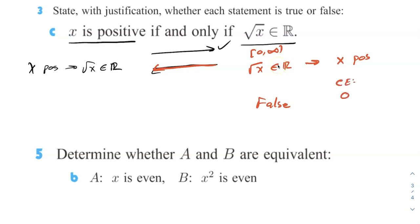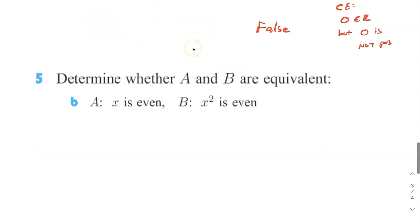We haven't talked about this yet, but a lot of times when something is false, you want to give a counter example of reason why it's false. I want to give a counter example of this, a reason why this is not true. I would just say zero is an element of the reals, but zero is not positive. So that's why this one's false. So it's not if and only if in this one.